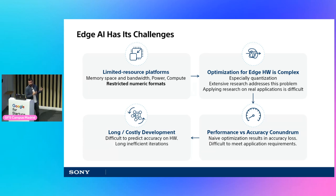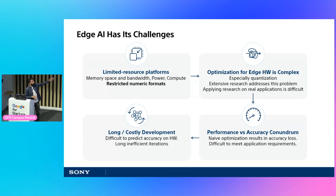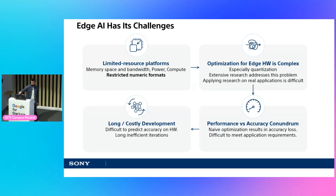This leads to long and costly development cycles where you put in so much effort and eventually either the performance is not as good, or in the worst cases, you're not even able to deploy the model on the edge device. And sometimes even more painful is that in many cases, the accuracy you get at the end of the optimization flow on the framework isn't even close to what you see on the hardware — so it's hard to predict.